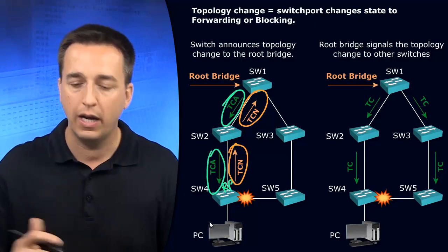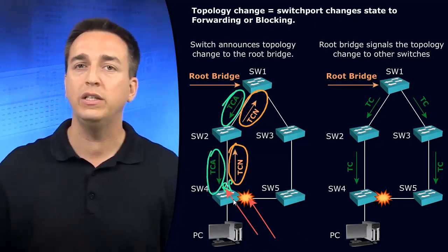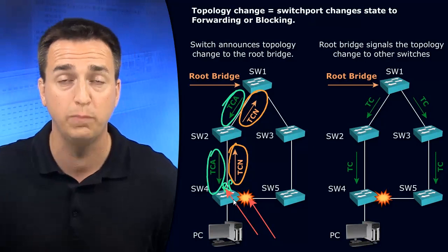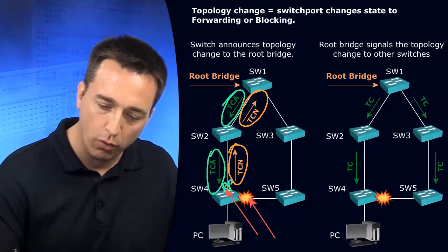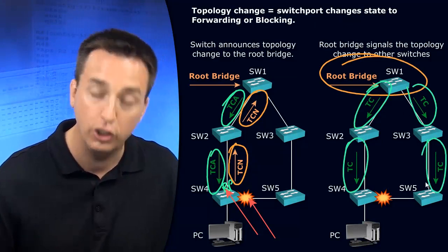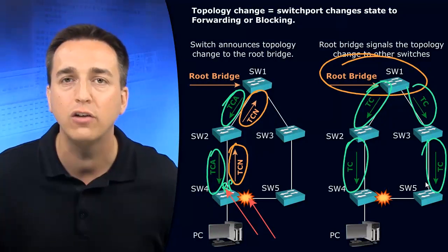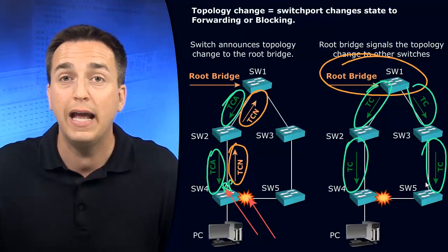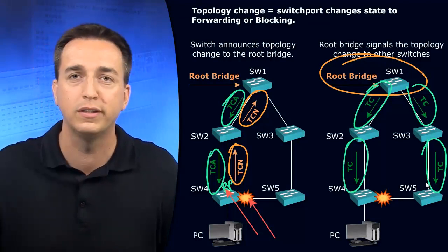But do any of the other switches at this point in time know that this failure has occurred, that this interface has changed, and as a result, they have to recalculate the spanning tree topology to make sure that their root ports, designated ports, and potentially blocked ports are still accurate and correct to prevent a loop from occurring? No, they still don't know that. It is up to the root bridge to send out topology change BPDUs, telling all the other switches that something has changed and they should recalculate the spanning tree topology to make sure their root ports, designated ports, and blocked ports are correct.